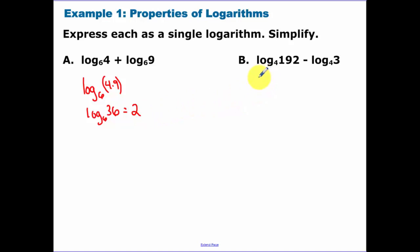So the second one. Under subtraction, we can combine those into one logarithm where I have 192 over 3. Now 192 divided by 3 is 64. 4 to what power gets me 64? That's 3. Whereas I wasn't able to evaluate either one of those individually.